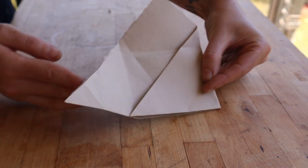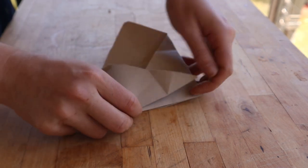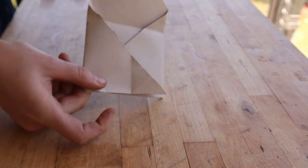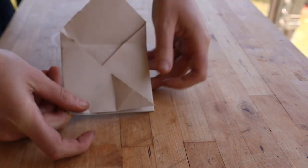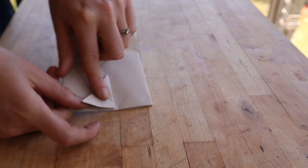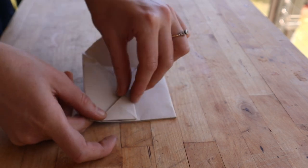And then take the other side fold it across the other way. Press it all down and then you're going to take this corner and kind of fold it back onto itself.